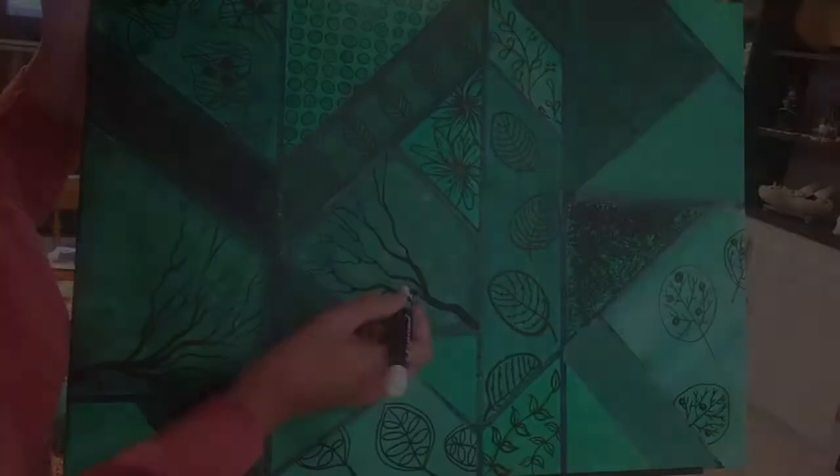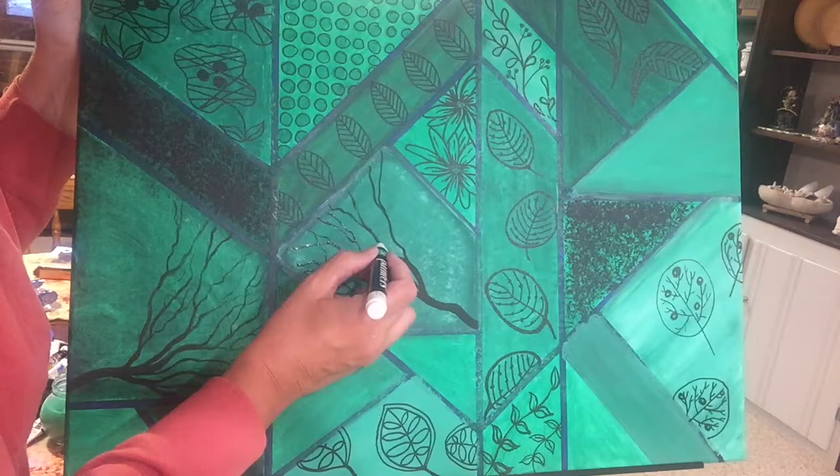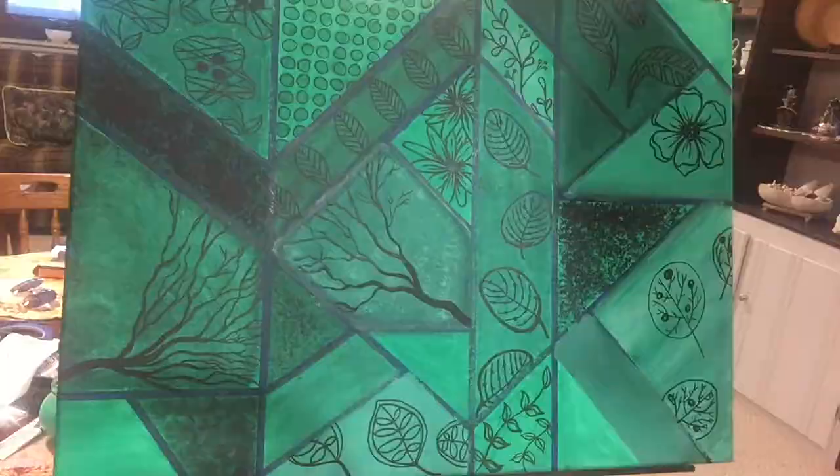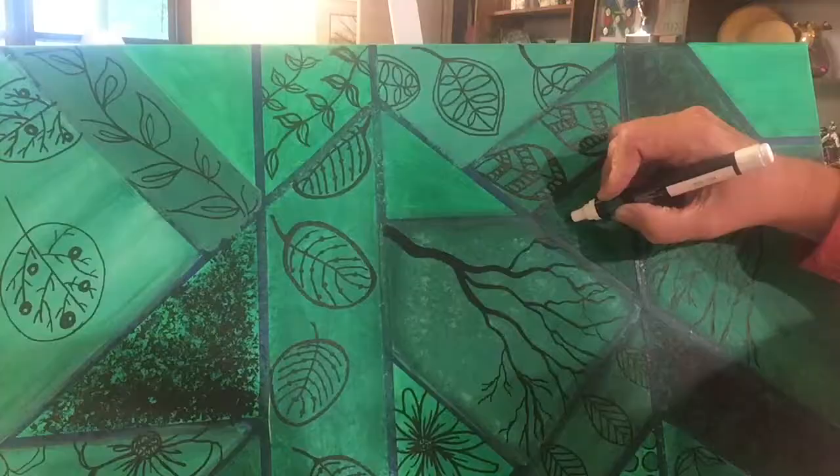Right here, I'm just going over my paint lines that I did with the paintbrush with the pen now just to make it come across a little bit darker. And here's what I'm doing with the first flower. Some more leaves. And these are just some little flowers right here too.